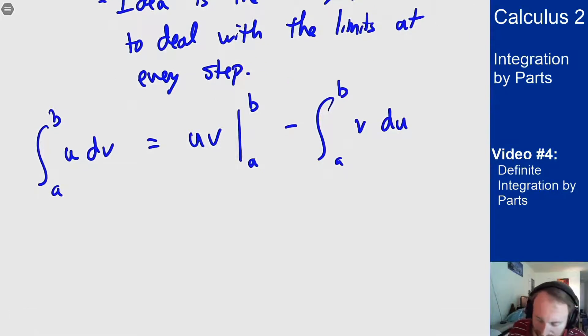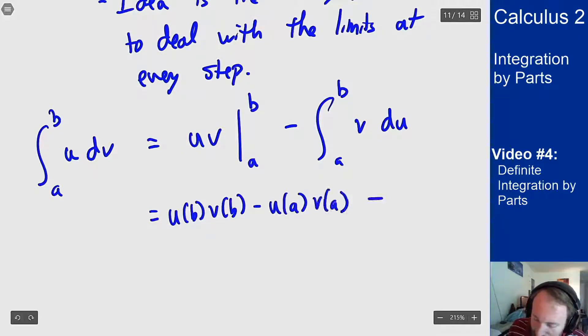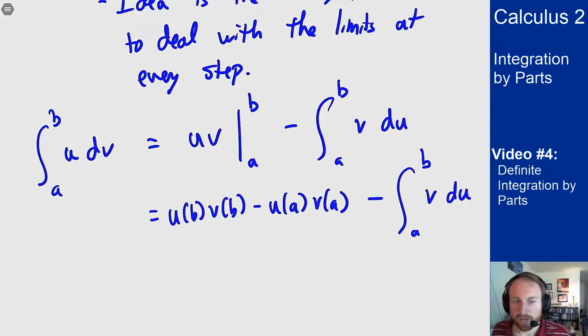So in essence, this simplifies out to here being u at b times v at b minus u at a times v at a, and then minus this integral term over here, like normal. So you have to deal with the limits on this function term as well as on the integral at the end.